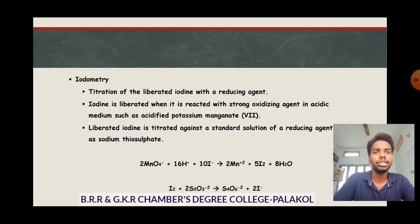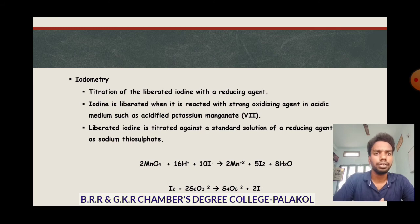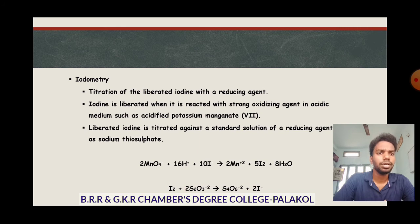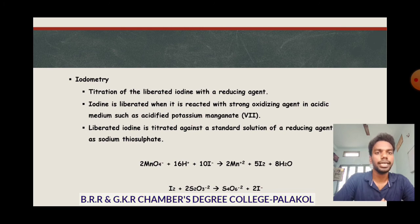Iodometry is an indirect titration — it involves titration of liberated iodine with a reducing agent. Iodine is liberated when potassium iodide (KI, I⁻) reacts with a strong oxidizing agent such as acidified potassium permanganate in acidic medium: MnO₄⁻ + 16H⁺ + I⁻ → Mn²⁺ + I₂. The I⁻ is first converted to I₂ (liberated iodine), and that liberated I₂ is then titrated with standard sodium thiosulfate solution. This method has wide applicability and is used for almost all oxidizing reactions.